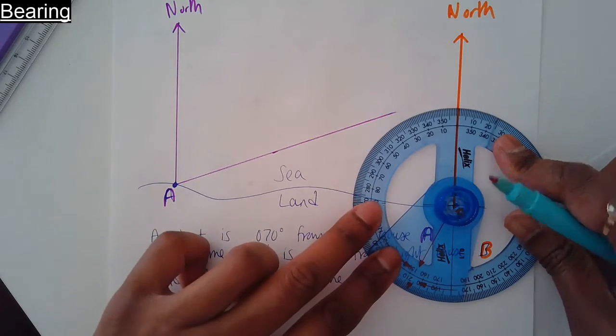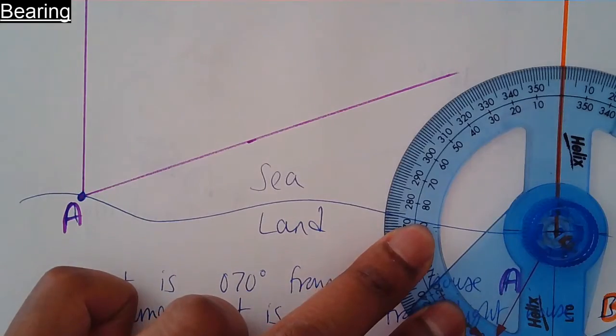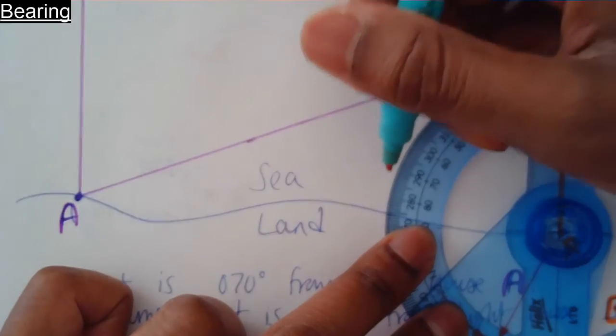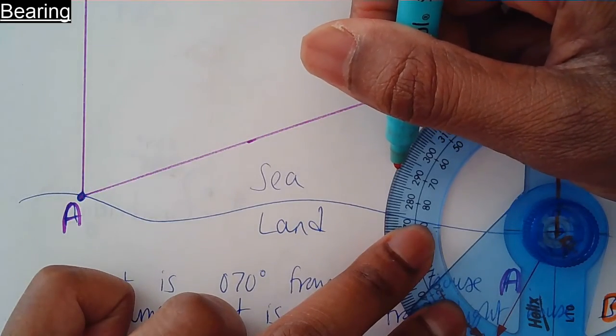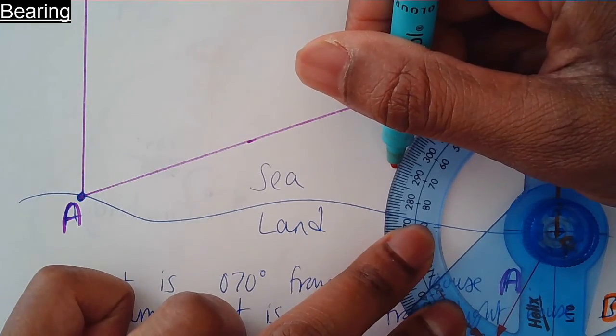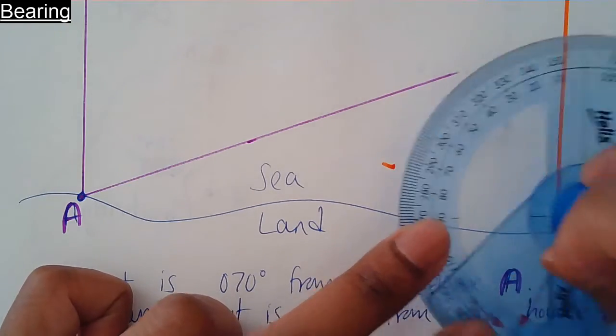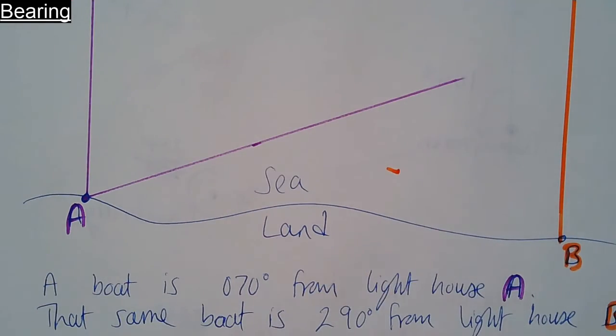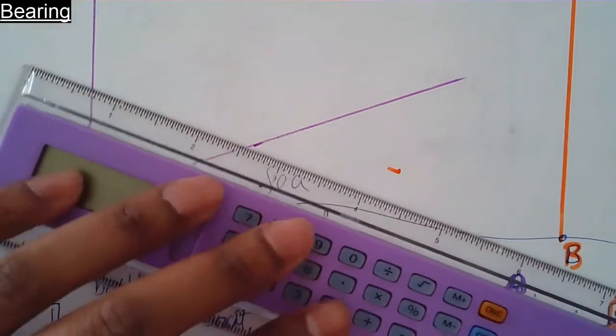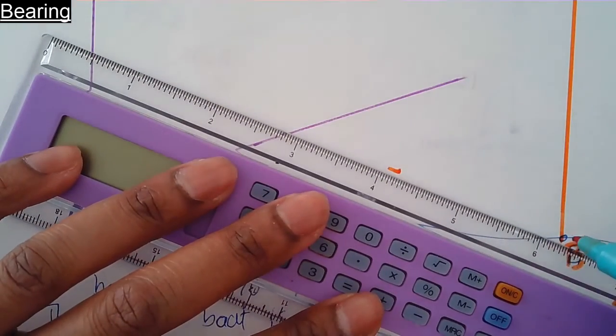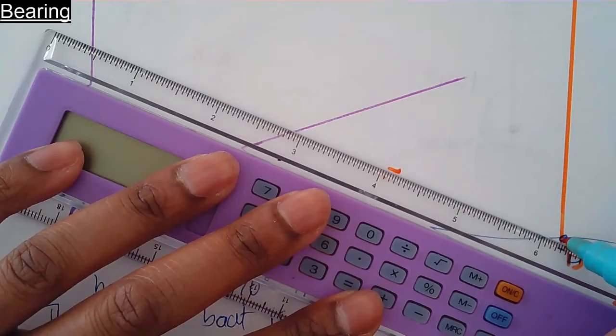290 is right there. Now join it up from here to here, take it all the way across.